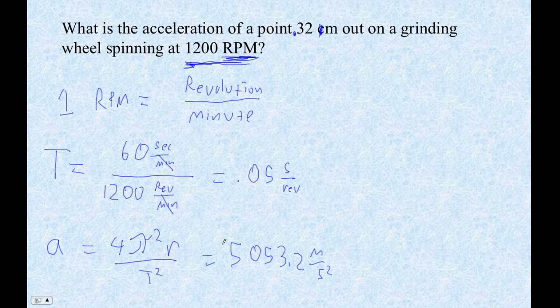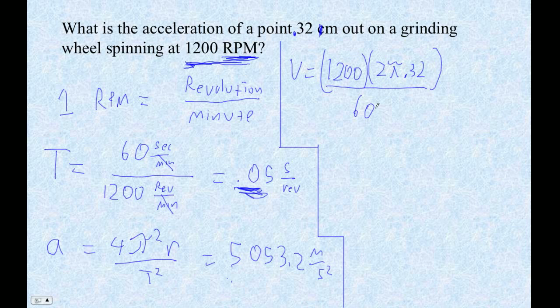So anyway, that's one way to do it is to just find the period. Let me show you the way I did it when I was sitting where you are. Look at those straight lines. Here's what I would do is I'd say, okay, the velocity is 1200. And it goes 1200 times, it goes times 2 times pi times 0.32. That's how far it goes. It goes 1200 circumferences in 60 seconds.